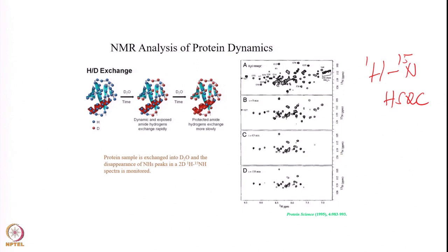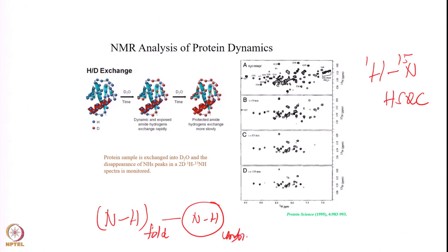What is required is that there has to be some local unfolding events. Because if the protein is in a folded state, the NH proton is not accessible. It has to become unfolded first, then after that it can exchange with D2O to become ND. There is a folding-unfolding process, and depending upon how the local folding-unfolding events are happening, you can have different kinds of exchange rates.